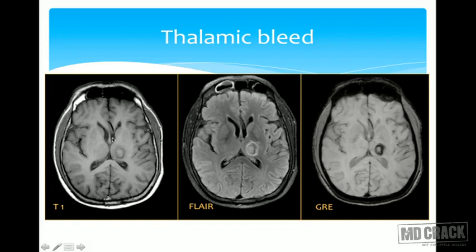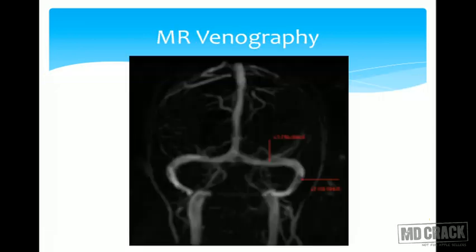Another patient presented with a thalamic bleed. A T1-weighted image showed the bleed within the left thalamus, confirmed on FLAIR and gradient echo (GRE) images. GRE sequences are excellent at picking up small quantities of blood or calcium; however, it is extremely difficult to differentiate between calcium and blood on MRI.